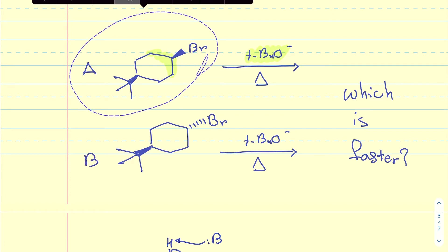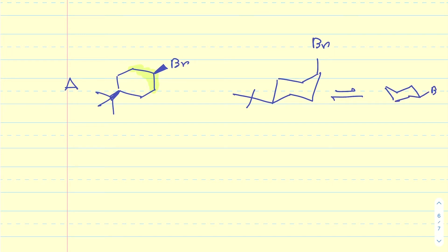So I'm going to copy that structure and paste it down here. So let's convert this to a chair conformation. It appears that one of the chair conformations is going to look like this. And the other chair conformation is going to look like this. It's going to have the bromine in the equatorial position, t-butyl in the axial position.